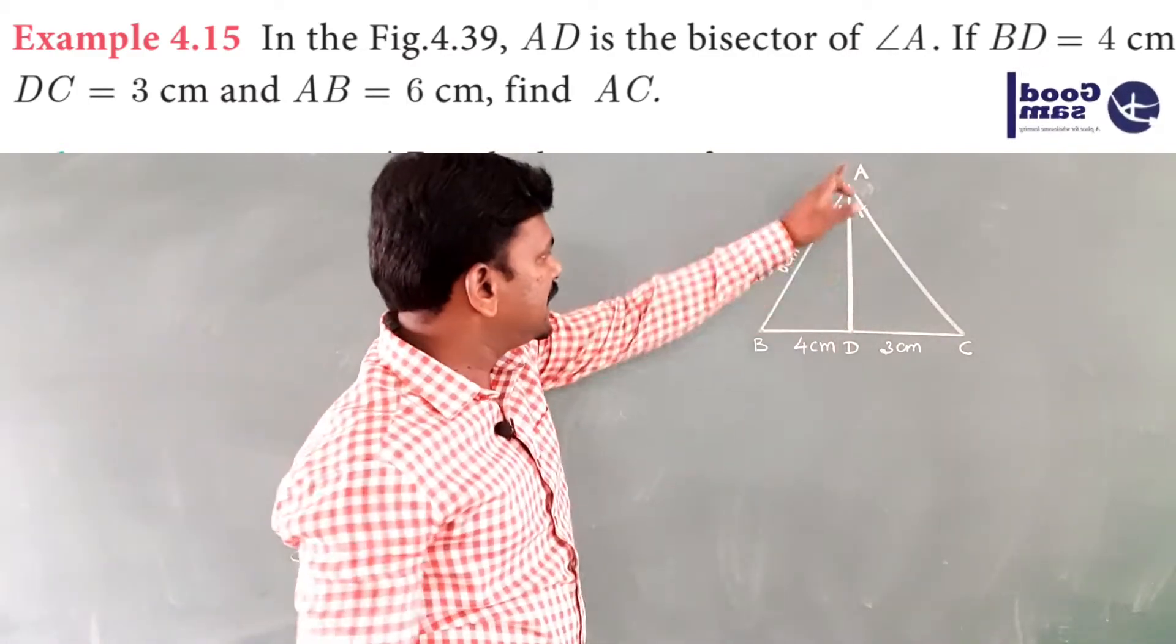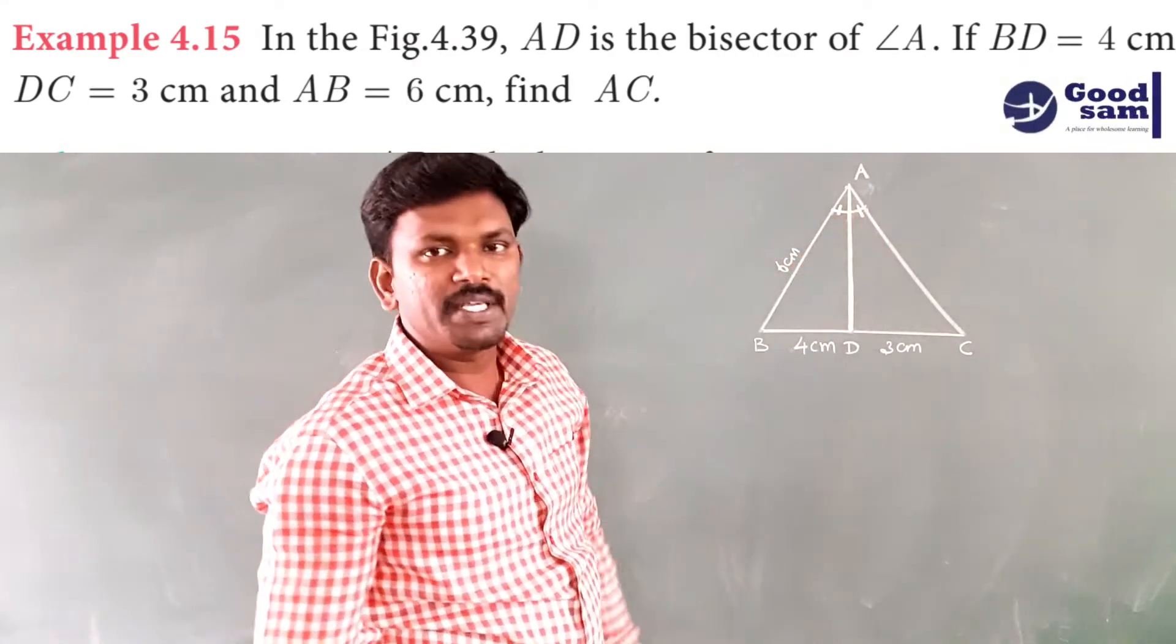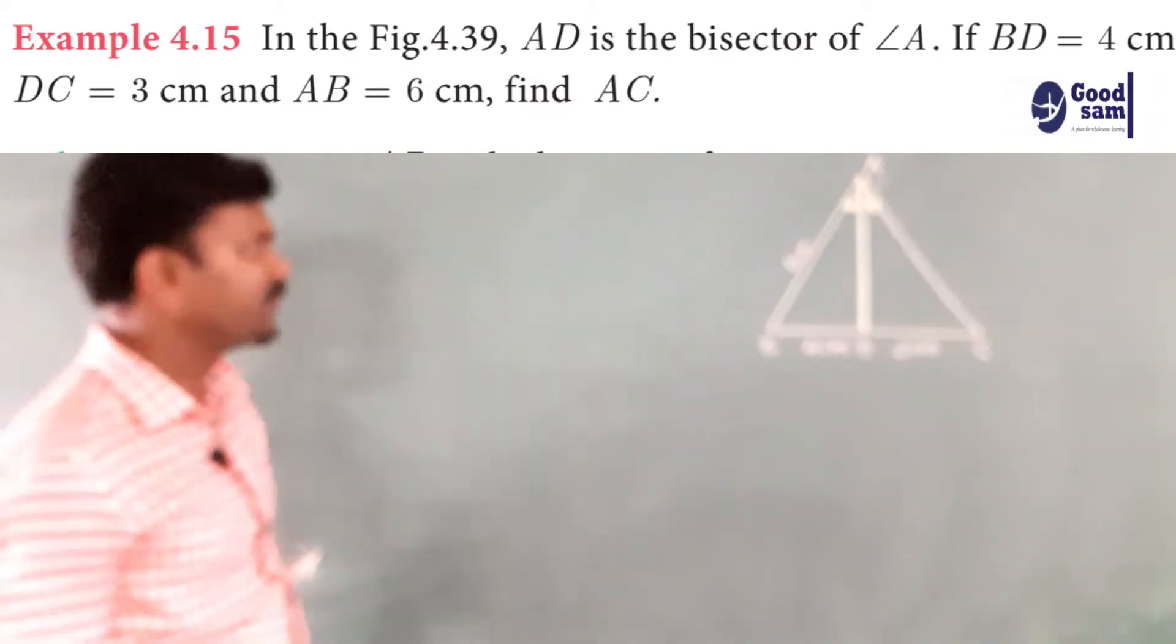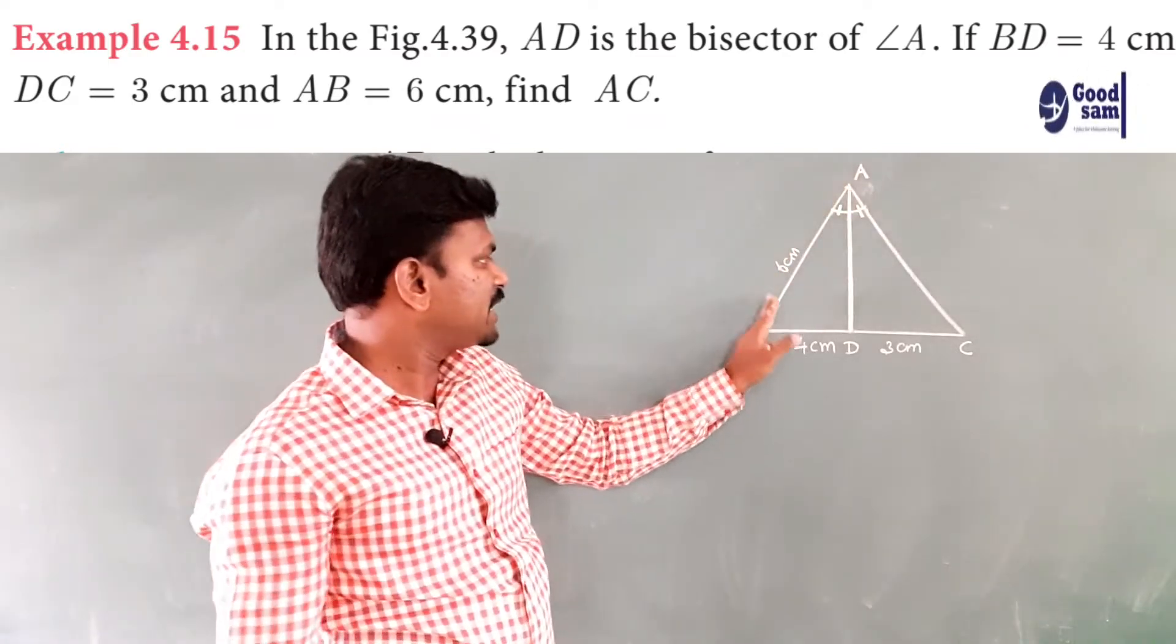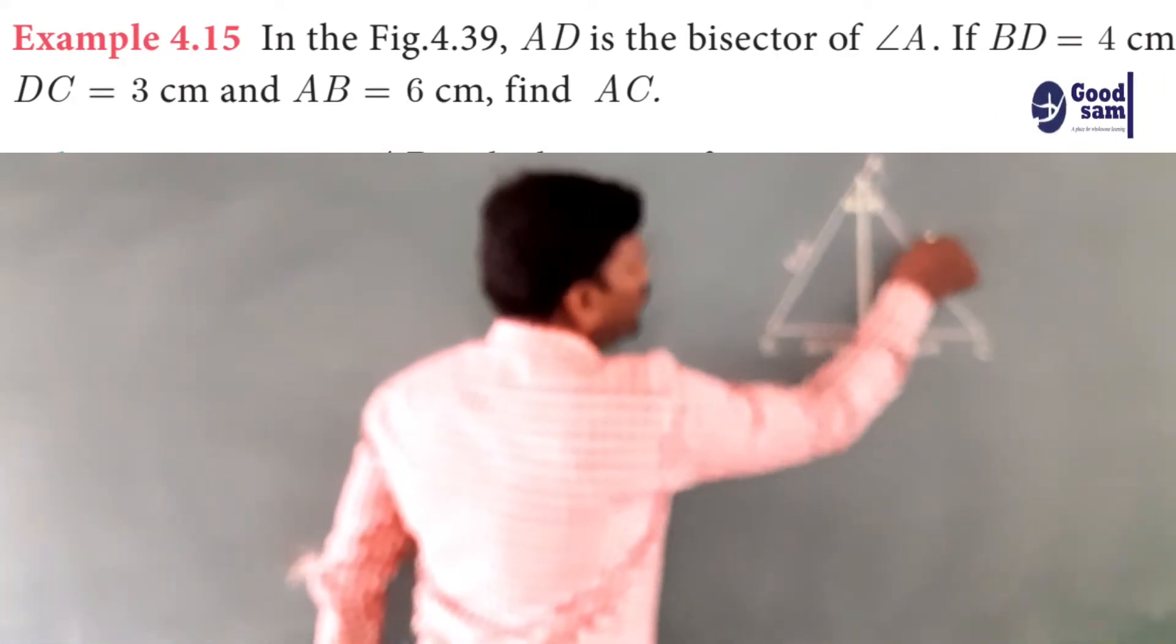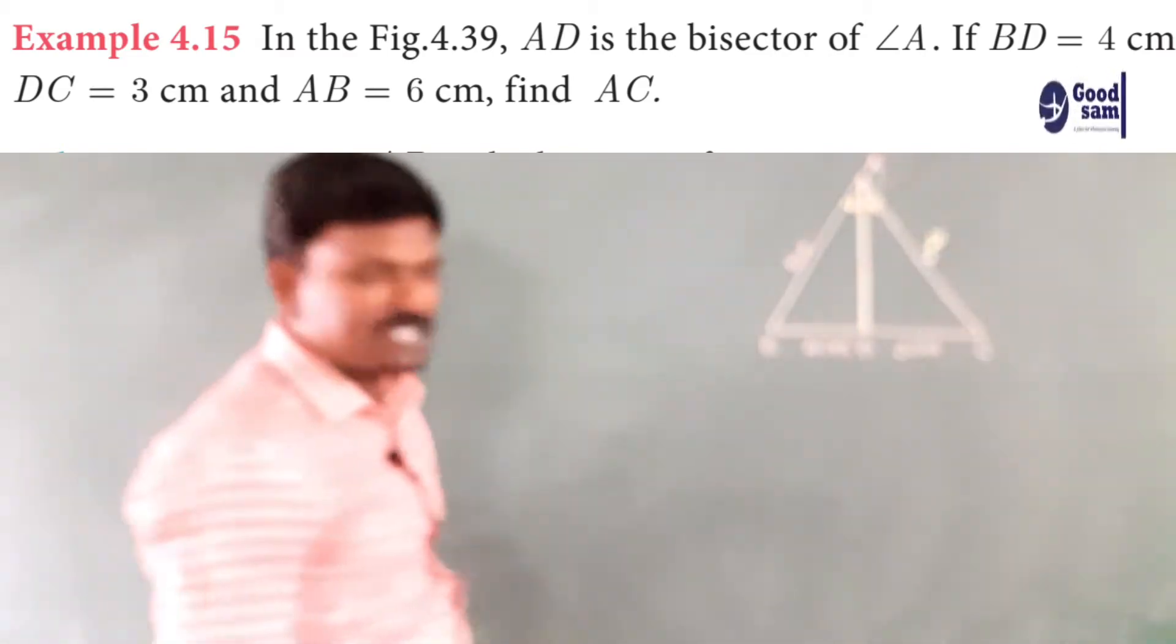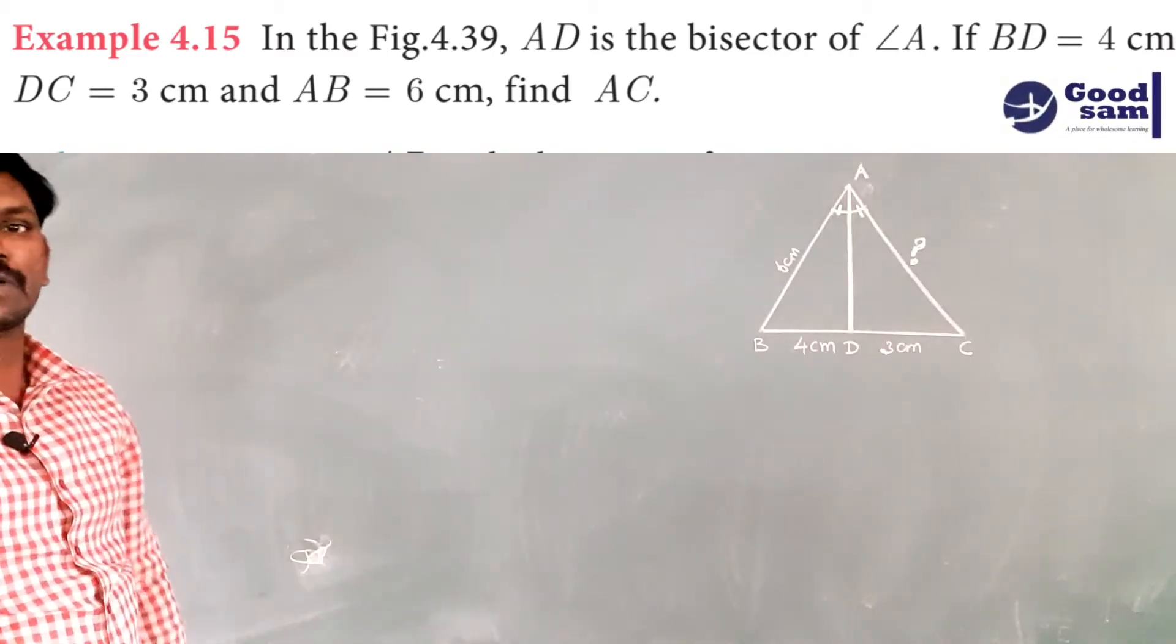The straight line AD divides the angle into two equal parts. That is why AD is an angle bisector. And the given data's AB 6 centimeter, BD 4 centimeter, DC 3 centimeter, we have to find the length of AC. Find AC. This is the question given in your textbook.